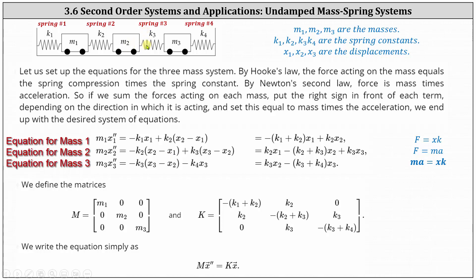As mass two moves to the right, spring three is compressed, giving a force to the right, given by K3 times the amount of spring compression, given by the difference of X3 and X2.